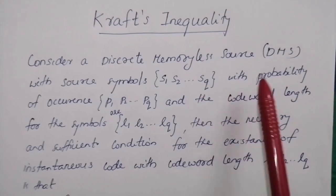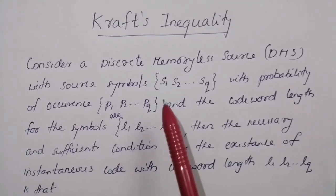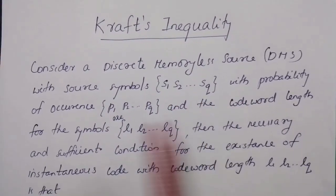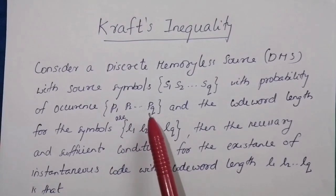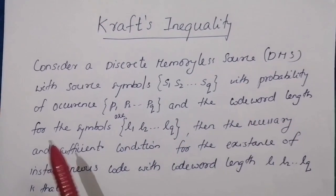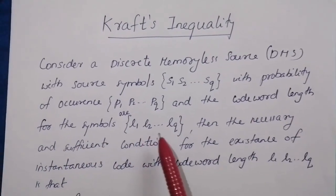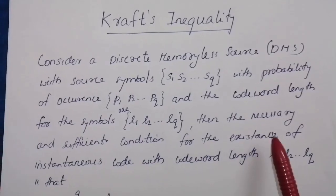Consider a discrete memoryless source with source symbols S1, S2, etc., SQ with probability of occurrence P1, P2, etc., PQ, and the codeword length for the symbols are L1, L2, etc., LQ.